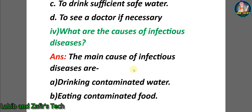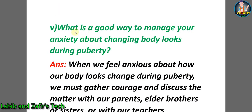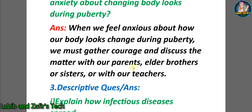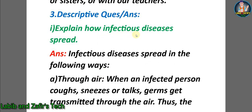Question four: what are the causes of infectious diseases? Answer: the main causes are A) drinking contaminated water, B) eating contaminated food. Question five: what is a good way to manage anxiety about changing body looks during puberty? Answer: when we feel anxious about how our body looks during puberty, we must gather courage and discuss the matter with our parents, elder brothers or sisters, or with our teachers.